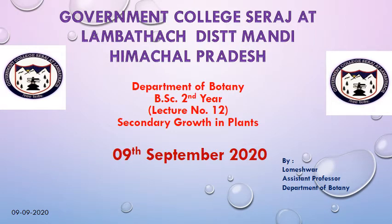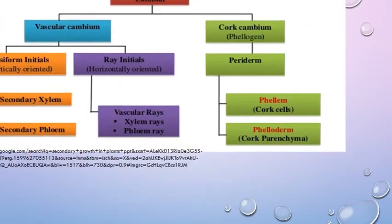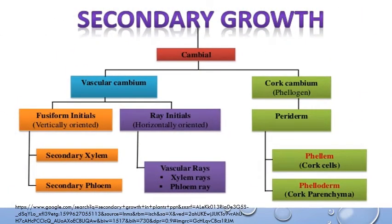Hello everyone, today we will discuss one important topic in plant anatomy: secondary growth in plants. Secondary growth is growth in girth, or increase in diameter or width of a plant. The factor responsible for secondary growth is cambium.